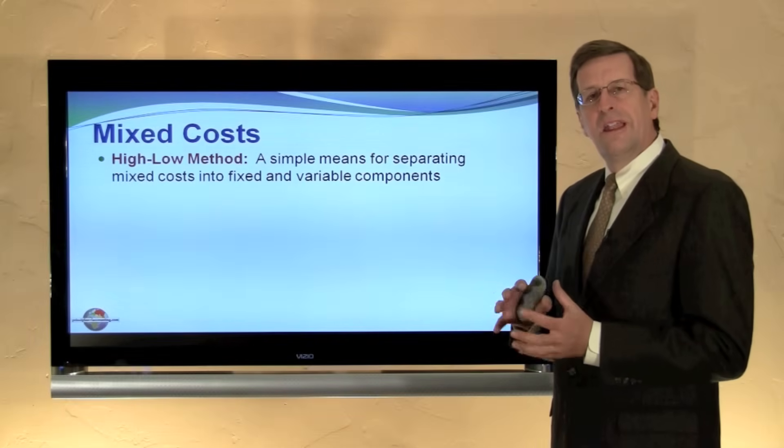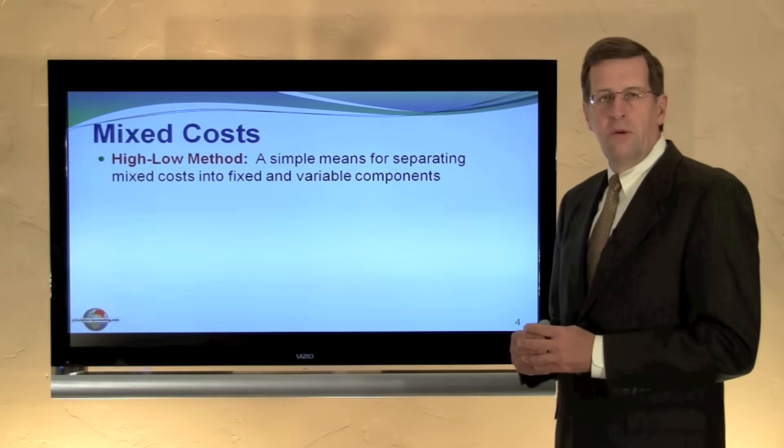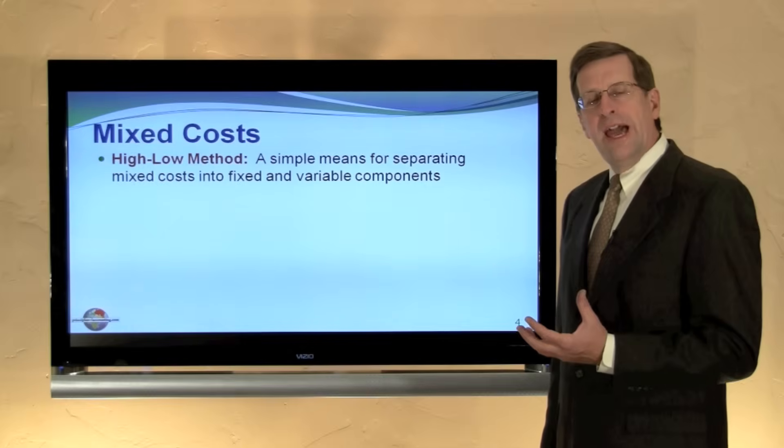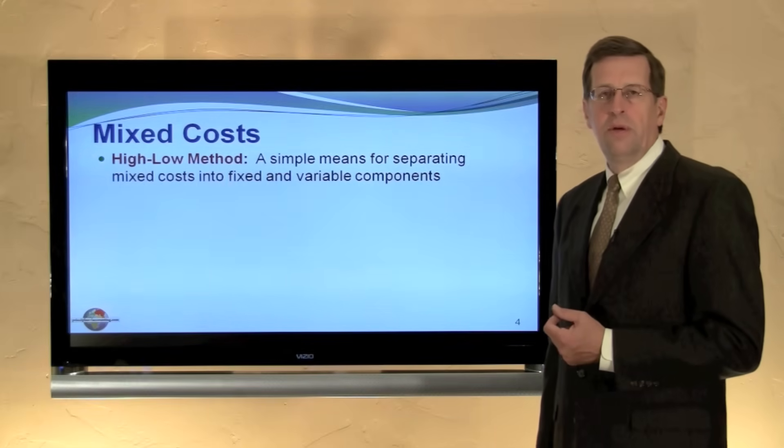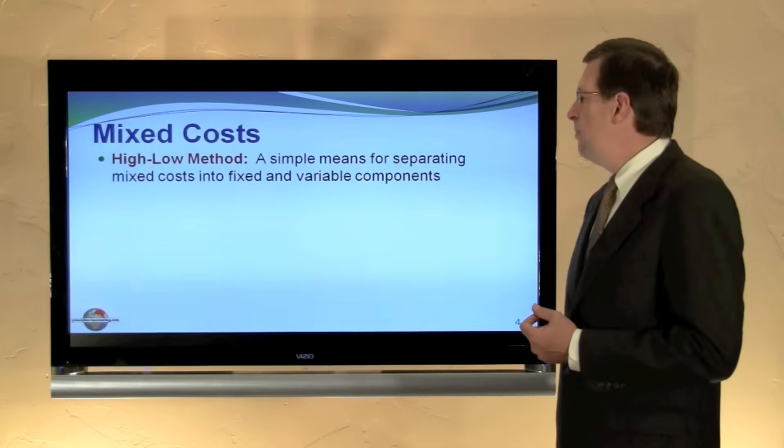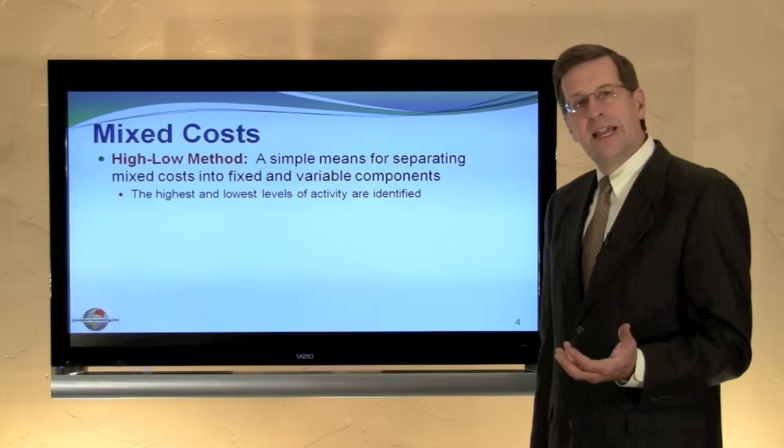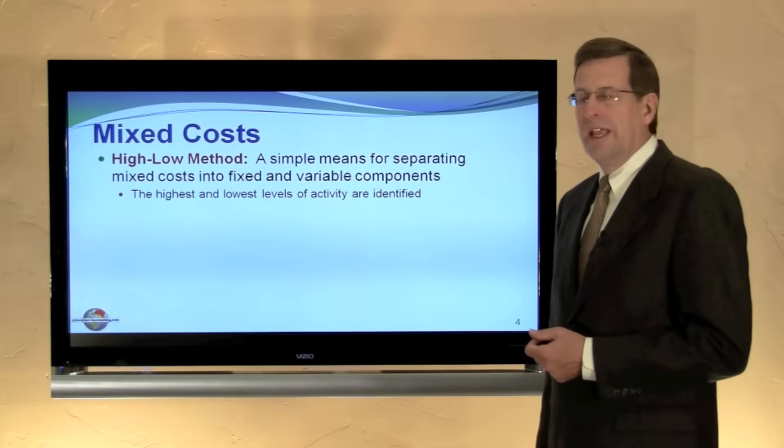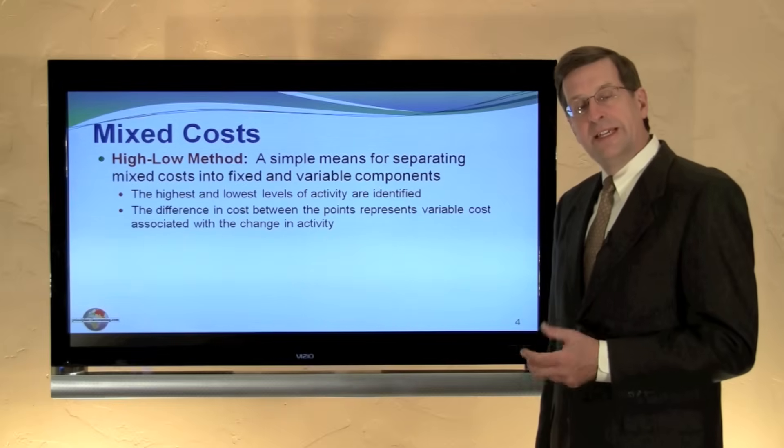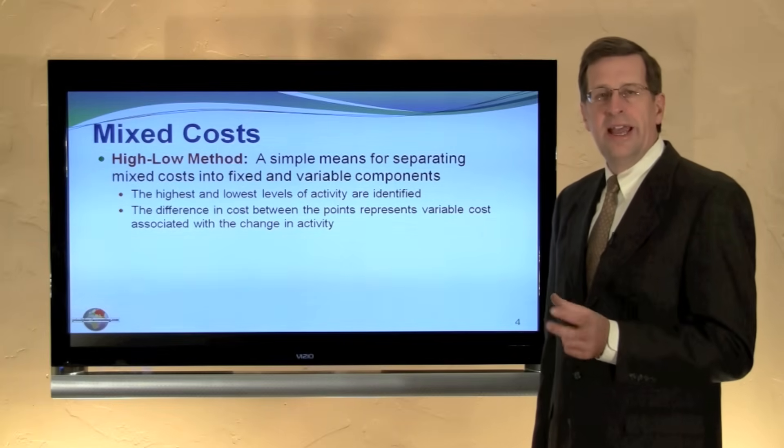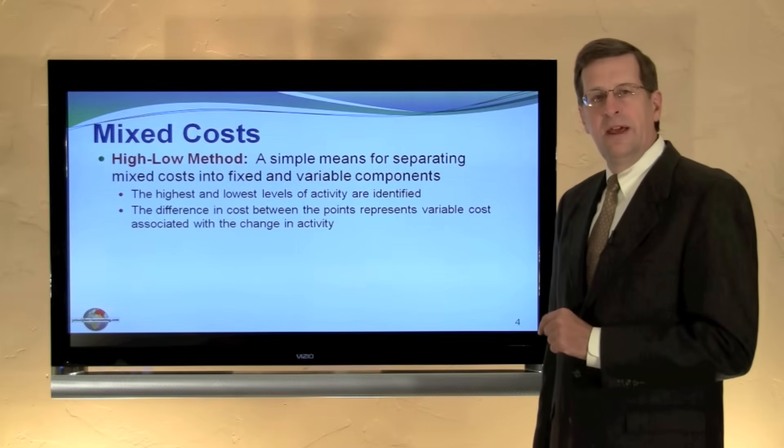Oftentimes, a cost is not clearly fixed or variable in nature as it was for Butler's Car Wash. So we may need to do an analysis to separate the total cost into presumed fixed and variable components. One way for doing this is the high-low method. It involves several steps. The first of which is to find the highest level of activity and the lowest level of activity and identify the cost for each of those levels of activity and see what the difference is between the high cost and low cost and see what the difference is in the volume between the high level and the low level.